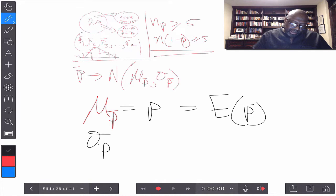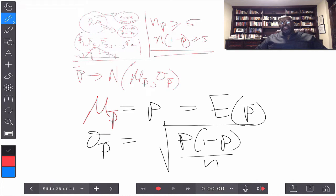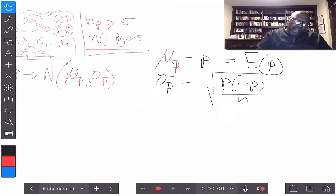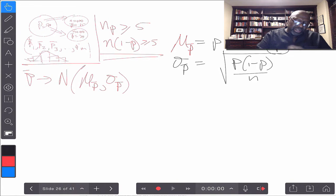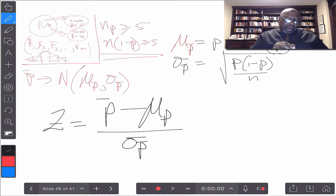The standard deviation of P bar turns out to be the square root of P times 1 minus P over N. That is the standard deviation of P bar. If I have a sample proportion, and I now want to calculate the Z score associated with it, then that Z score is given by sample P bar, how far is it from the population, which is mu P bar, and then divided by the standard deviation, sigma P bar.